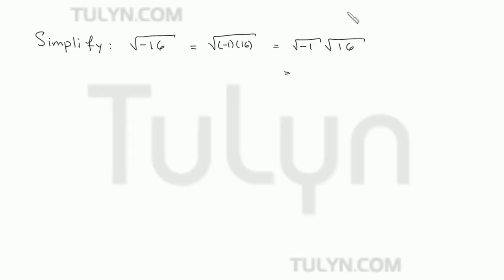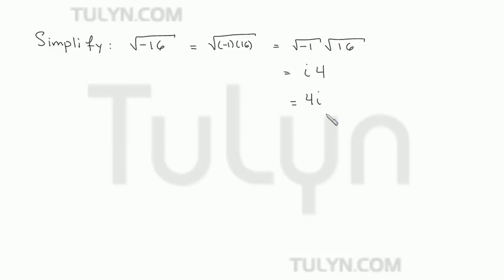The square root of negative 1 is the definition for the complex variable i, and we know the square root of 16 is 4. Rewriting it — since we always write i at the very end — the square root of negative 16 simplifies to just 4i.